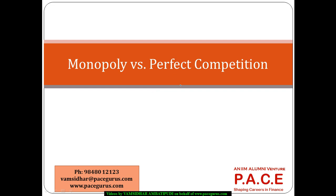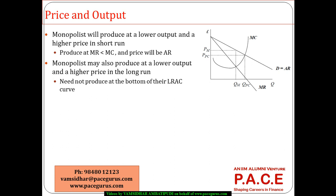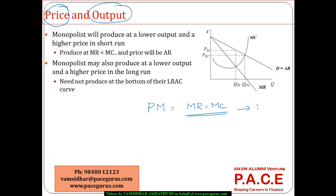Let's try to identify some of the common differences that exist between a perfectly competitive environment and a monopoly. The first dimension is pricing and output. We have already discussed in our earlier sessions that whatever the market structure, the profit maximizing output is that particular quantity where MR is equal to MC — where the marginal cost curve cuts the marginal revenue curve from the bottom.